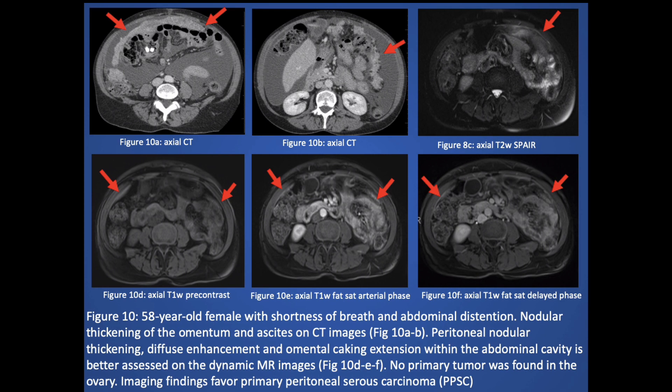A 58-year-old female with shortness of breath and abdominal distension. There is nodular enhancement of the omentum and ascites on the CT images. The extent of the disease is better assessed on the dynamic MR images. No primary tumor was found in the ovary, and imaging findings favor primary peritoneal serous carcinoma.